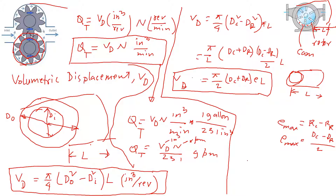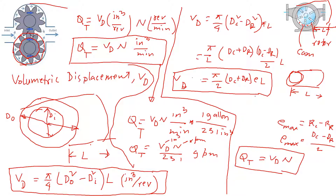Similarly, this Vd can be converted to theoretical flow rate by multiplying by N and doing whatever unit conversion is needed — gallons per minute or SI units like meter cubed per second. This approach applies to both the vane pump and the gear pump. The key is to understand the displacement volume and how those equations are derived.